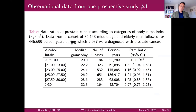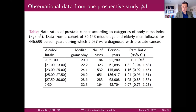The typical data you need to collect for a dose-response meta-analysis looks something like this: rate ratios of prostate cancer according to categories of BMI. You can see different categories of BMI, the median BMI within each group, number of cases, person-years, and measures of effect.